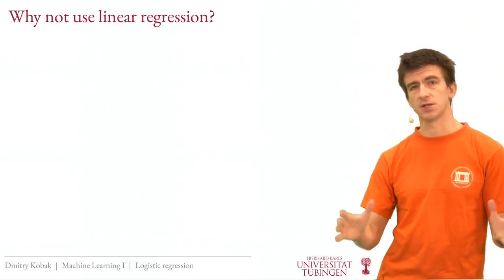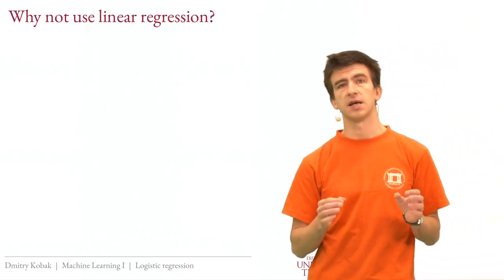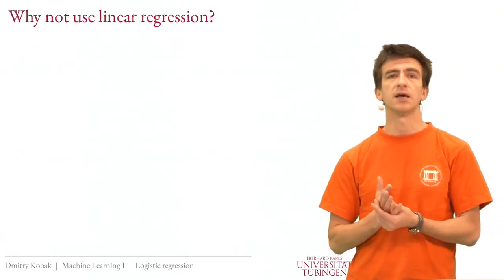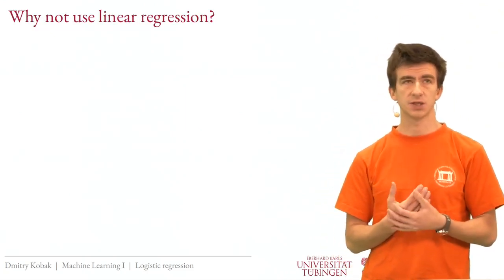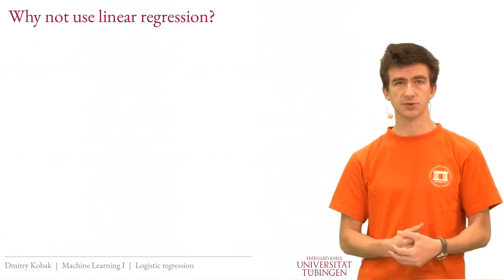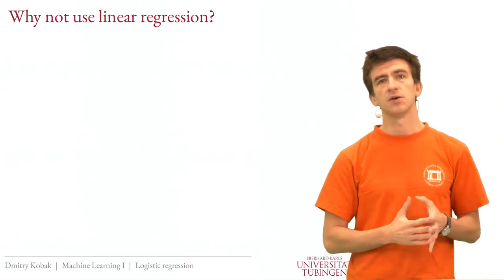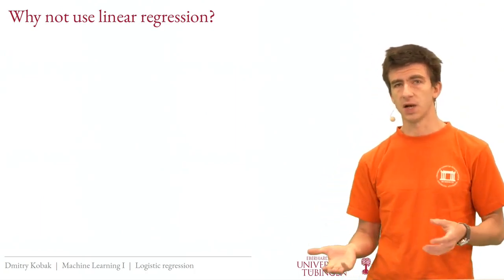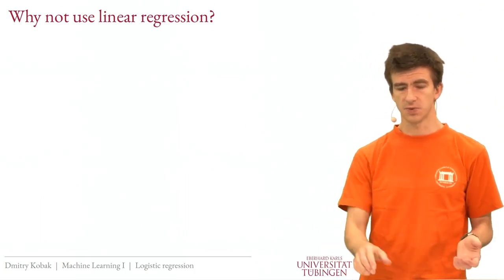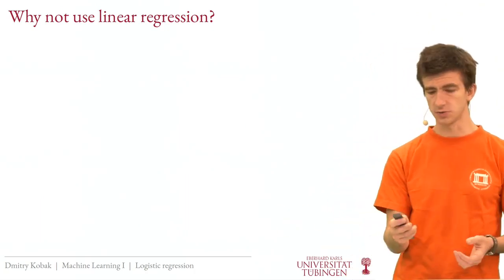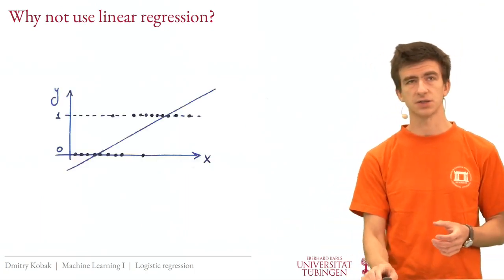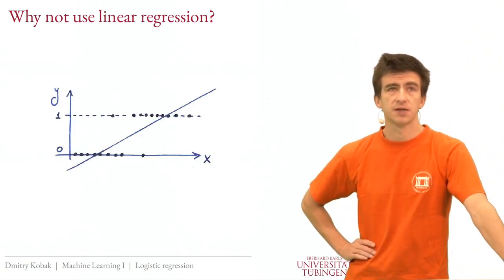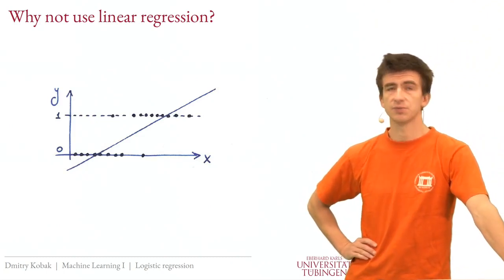The first important question we need to understand is: why do we need something else? Why can't we just keep using linear regression as we did? We have all the machinery nicely set up. Now we have Y's that can be zero and one, so maybe we can just do the same thing. In fact, in some situations it's not too bad, but there are problems with that. Let me try to explain.